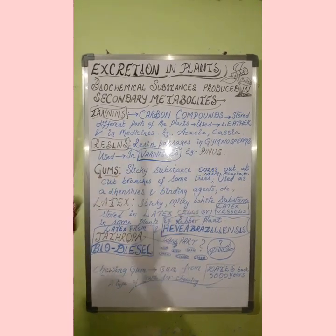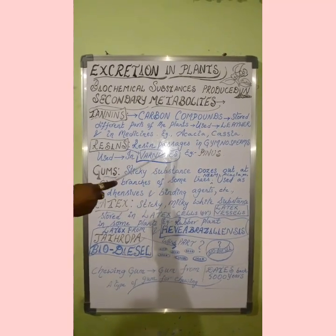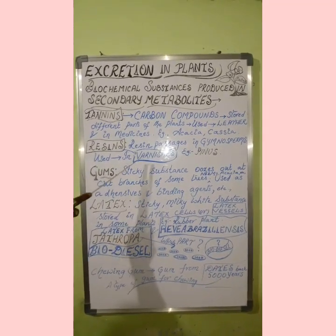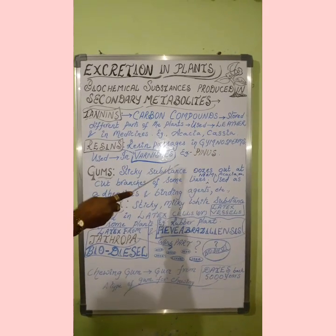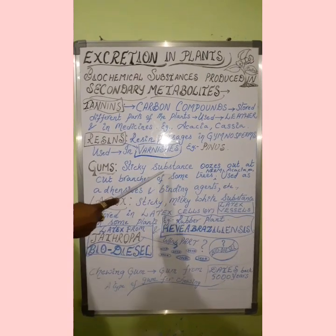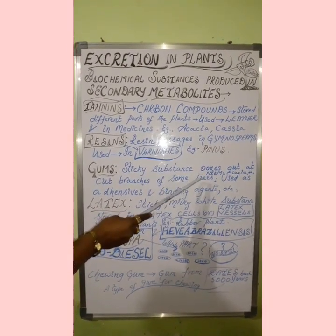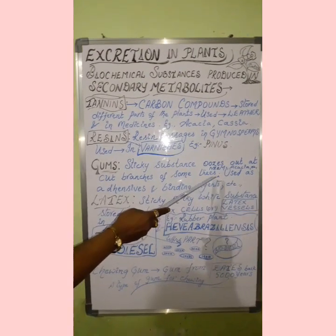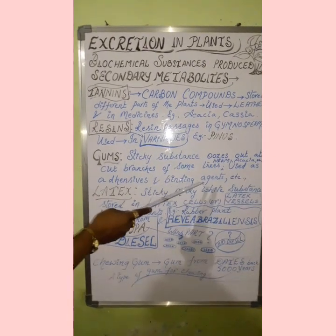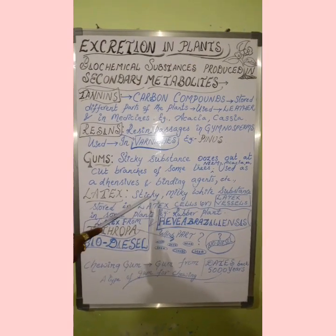Resins are stored in resin passages in gymnosperms and are widely used in varnishes. Example: pinus. Gums are sticky substances that ooze out at the cut branches of some trees, such as neem and acacia. They are widely used in adhesives and binding agents.